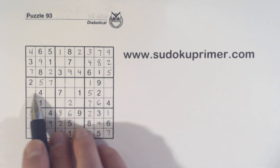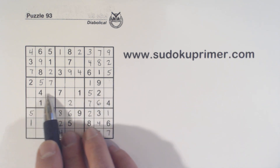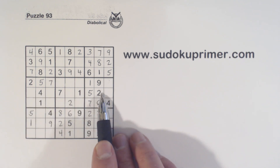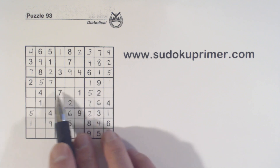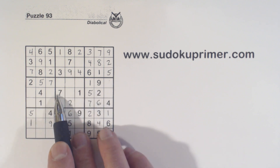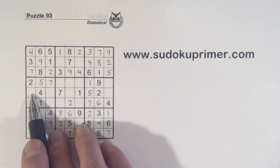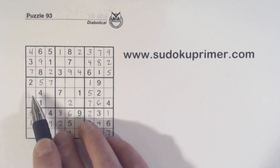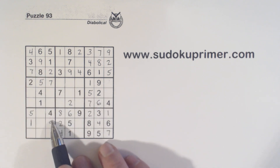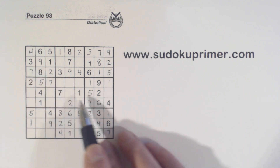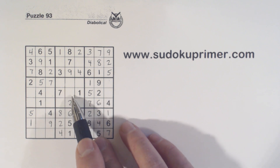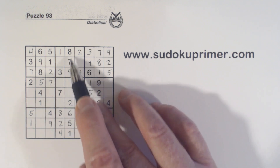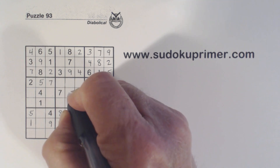Let's look at row five here — what are we missing? Three, six, eight, and nine. So that's a three.